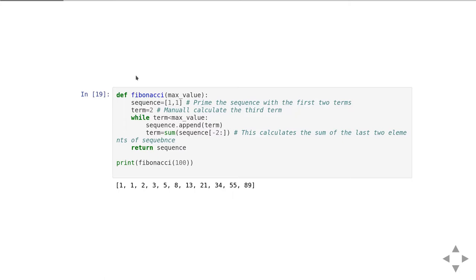We're going to show that it works by simply calling the function with max value as 100 and printing the result. You'll see it does indeed produce a Fibonacci sequence where we go up to, but not past, 100 as the last term. So we go up to 89.